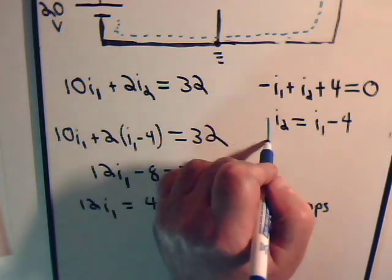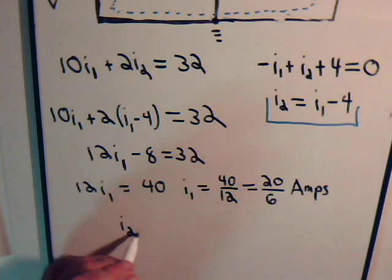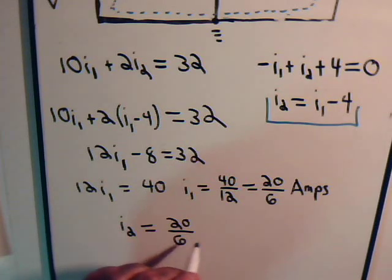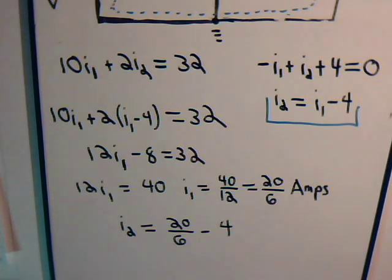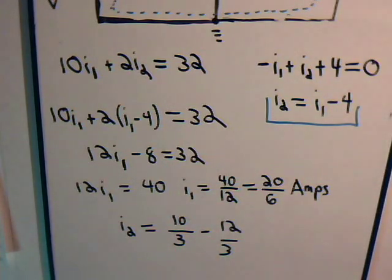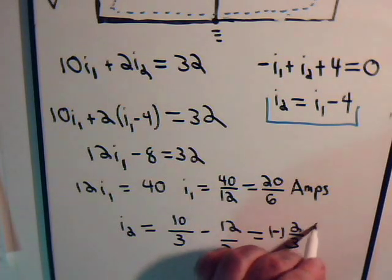That's easy enough to determine from here. Current I2 equals I1, 20 over 6, minus 4. If we put that over 6, 20 over 6 is 10 over 3. If we put this over 3, that would have to be 12. So this equals minus 2 thirds amps.